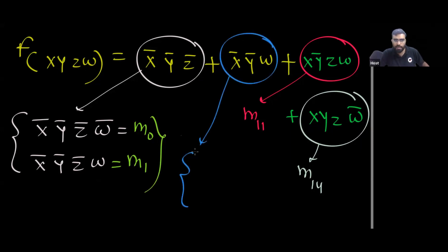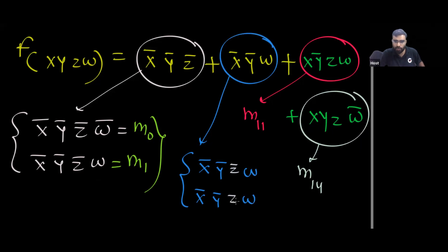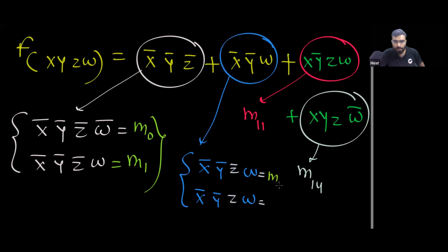Similarly, the term X̄ȲW is not a minterm because variable Z is missing. Placing Z in complemented or uncomplemented form gives minterm 1 (X̄ȲZ̄W) and minterm 3 (X̄ȲZW). So from this term we get minterms 1 and 3.